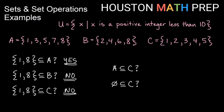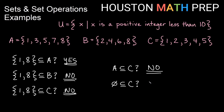Is A a subset of C? We look at A — we have 1, 3, 5, 7, 8. Are all of those inside C as well? 1 is in C, 3 is in C, 5 is in C, but 7 and 8 are not in C. So since not all of the things in A are in C, we say no. Remember that the empty set is a subset of any set — the answer will always be yes. The empty set is a subset of C because there is nothing in the empty set that we don't have in set C.